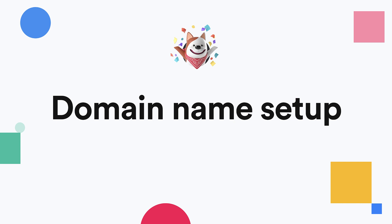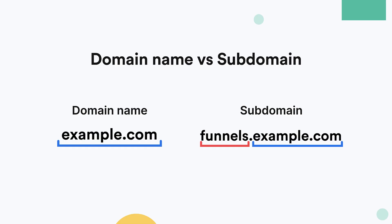Before we start, it's important to note the difference between your main domain name and the subdomains. The domain name is typically the name that you have bought from your registrar. In this example, it's example.com. A subdomain is anything that prefixes your domain name. In this example, it's funnels.example.com.